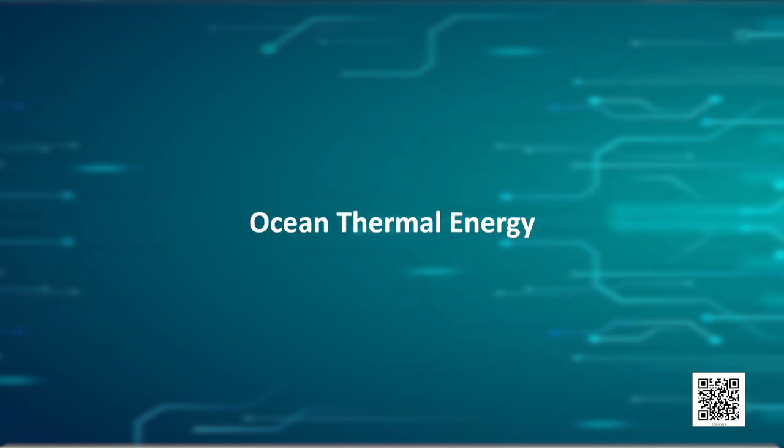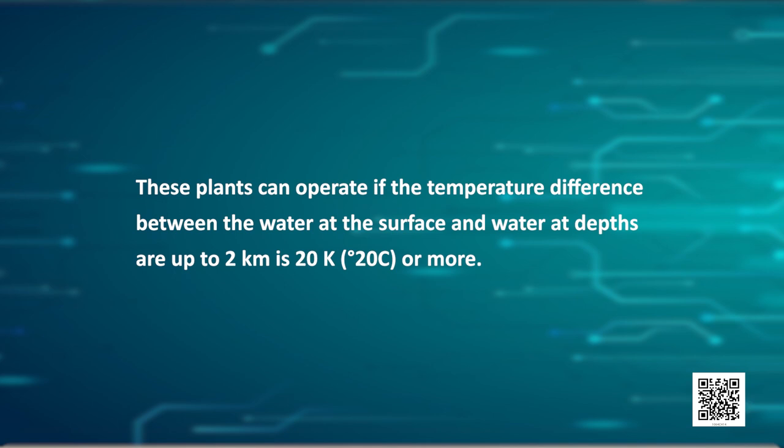Let us talk about ocean thermal energy. As the name suggests, the heat energy stored in the ocean gives rise to ocean thermal energy. The water at the surface of the sea is heated by the sun, while the water in the deeper sections is relatively cold. The difference in temperature is used to obtain energy. These plants can operate if the temperature difference between the water at the surface and water at depths of up to 2 kilometers is 20 Kelvin or more. The warm surface water is used to boil a volatile liquid like ammonia.